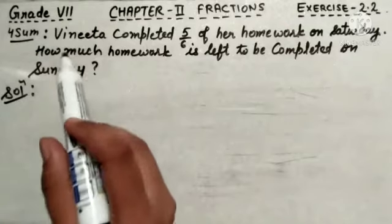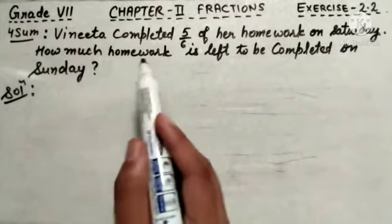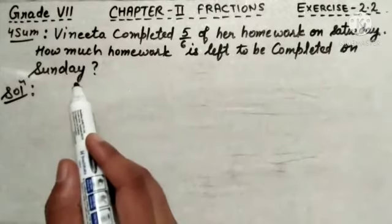Statement of 4th sum is: Vinita completed 5 by 6 of her homework on Saturday. How much homework is left to be completed on Sunday?